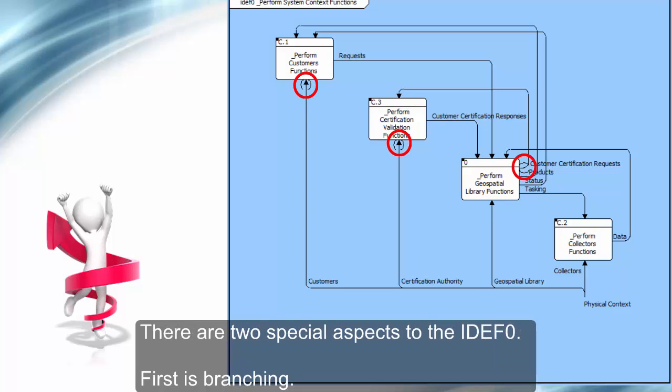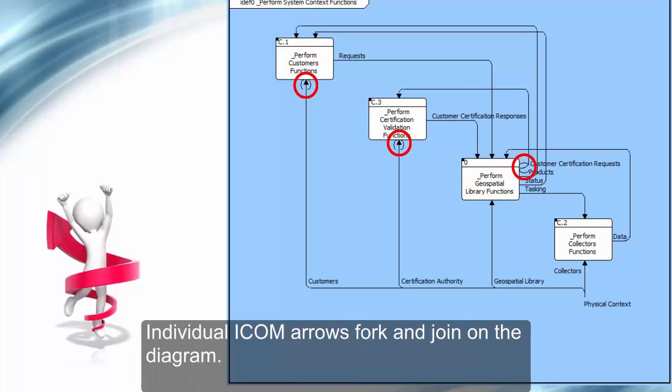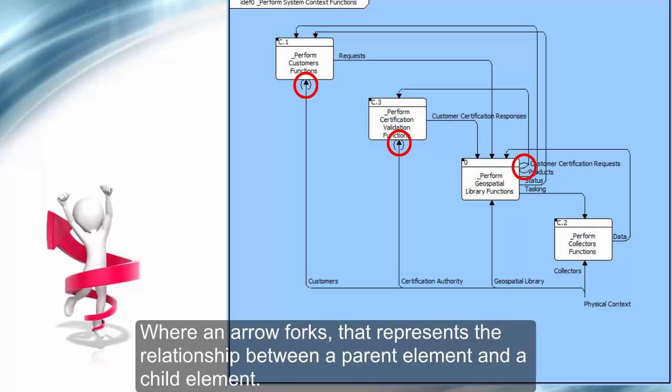There are two special aspects to the IDEF0. First is branching. Individual ICOM arrows fork and join on the diagram. Where an arrow forks, that represents the relationship between a parent element and a child element.